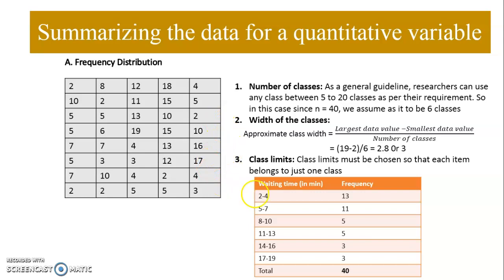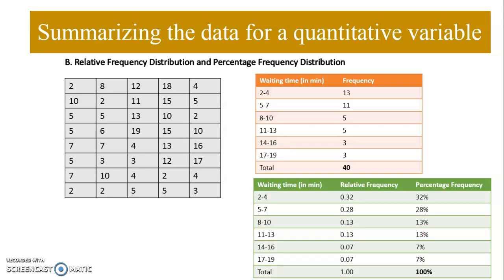We manually calculate how many times 2, 3, or 4 have repeated in the class interval 2 to 4. In this way we calculate the frequency distribution, which is a tabular representation of your data. We can also prepare the relative frequency distribution and percentage frequency distribution using the formula frequency divided by N. So this gives 13/40, 11/40, 5/40, 5/40, 3/40, and 3/40. To calculate the percentage frequency distribution, we multiply each value by 100.